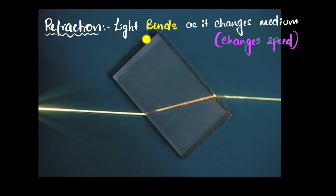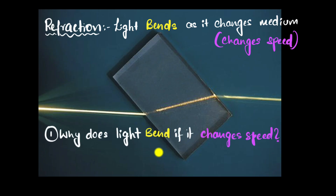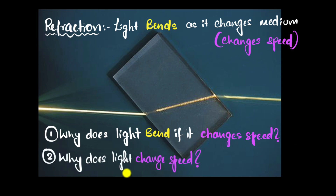In this video, we're going to try and understand why this happens. We have two questions: question one — why is it that if light changes its speed, it should bend? When light enters glass it slows down, but why should it bend? Why can't it just continue in the same direction, just a little slower? And a more fundamental question: why does light change speed in the first place? Why does light slow down when it enters glass?